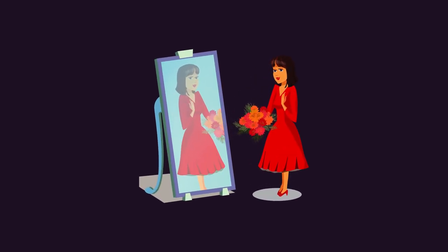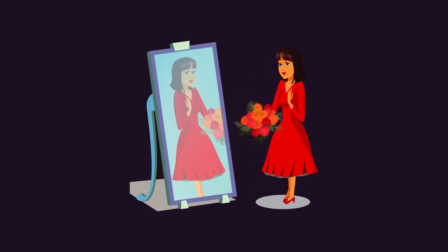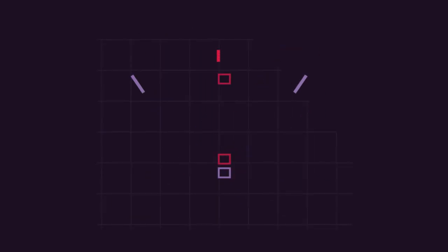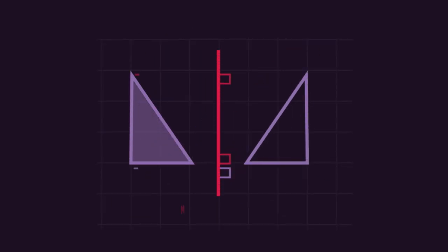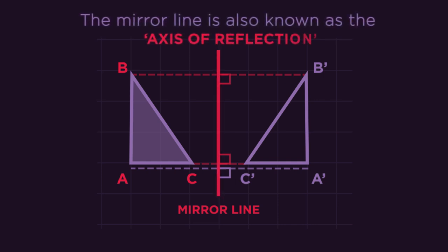Look in a mirror, and you see your reflection. In maths, it's pretty much the same thing. However, instead of a mirror, there's a mirror line. The mirror line is also known as the axis of reflection.